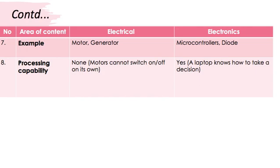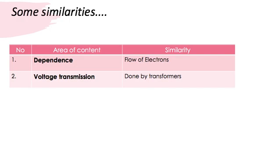We have covered a lot of differences. Now let's see a couple of similarities between them — yes, similarities apart from the fact that both terminologies start with the letter E. Both electrical and electronic devices depend on the flow of electrons; if there are no electrons, there is no electricity, and without electricity no electronic device can work. Also, in both types of devices, voltage transmission is done by transformers — there is no other way of transmitting voltages for them.